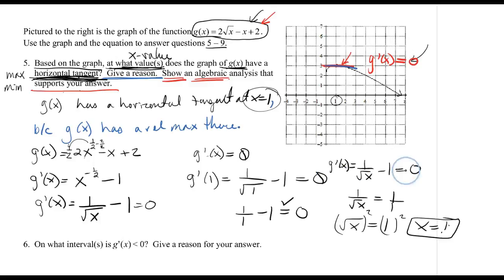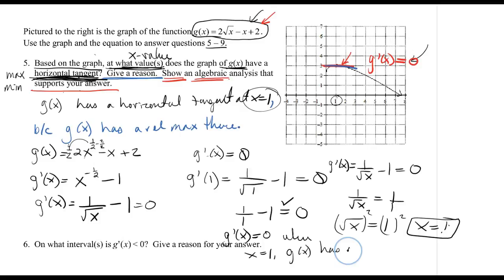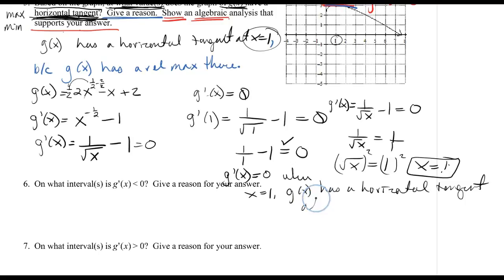I find x equals 1 when the derivative equals 0. This is my algebraic analysis. Since g prime equals 0 at x equals 1, g has a horizontal tangent at x equals 1. Don't be afraid to be a little redundant in the pursuit of clarity and communicating everything in your answer.